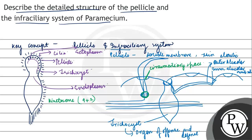Uske alawa hamein dekhne ko milta hai ki jo yeh region hai, kyunki pellicle double membrane hai to pehla membrane outer membrane jo hai, that is found to be continued with the ciliary region. Aur jo doosra membrane hai inner membrane, that is found towards the ectoplasm, right? So this is the ectoplasmic region.